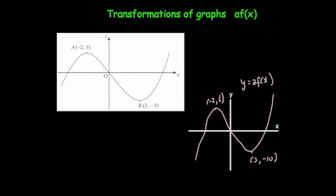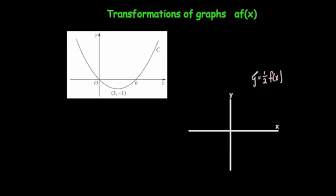This time we've been given a quadratic and we've been told to draw the graph y equals a half f of x. So that means we're going to multiply all the heights by a half — divide them by 2. It will still cross the x-axis at 0 and 6 because those heights were 0. The turning point coordinate was 3 across, minus 1. We're going to halve the y coordinate, so it's going to be 3 across and a half down — coordinate 3, minus a half. It's going to be the quadratic shape but less steep because we're halving the heights.